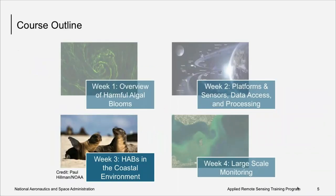So why take this course? The objective is to provide an overview of satellite Earth observation resources, data, and tools available for HAB applications. By the end of the course, you should be able to identify NASA's Earth Science remote sensing data products for the identification and monitoring of HABs — covered mostly in week two — describe how coupled remote sensing and modeling approaches are used in decision support tools, and use Earth Science data tools to monitor for HABs.